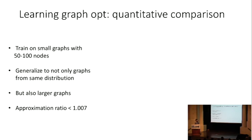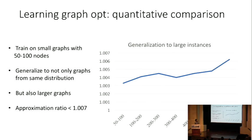For example, we train our model on a small graph, which contains only 50 to 100 nodes, and we can generalize to up to thousands of nodes. Of course, the larger the instance, the harder the problem, but we can still keep the ratio low, below 1.007, which is almost perfect.